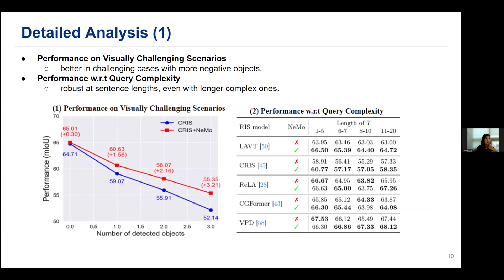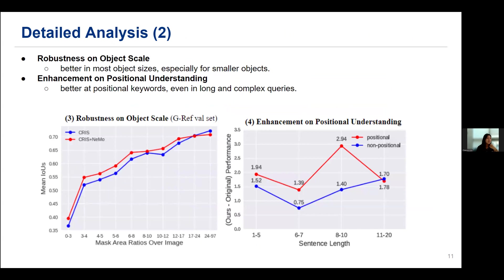Let's take a closer look at the key properties of NAMO. First, NAMO performs well even in visually challenging scenarios — the bottom left image shows that the performance gap grows as the number of negative objects increases. Also, the bottom right table shows that NAMO is robust at sentence length, even with longer and more complex ones. Next, we evaluate the impact of NAMO across different object sizes; improvement is seen in most cases, particularly for smaller objects. Finally, we tested sentences with and without positional keywords, and the graph shows that NAMO delivers stronger improvements especially when dealing with long and complex queries.